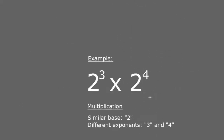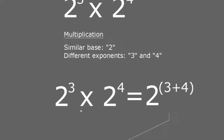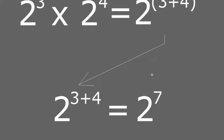In a simple example, if I am multiplying 2 cubed or 2 to the power of 3 by 2 to the power of 4, the same base is the number 2 and the different exponents are 3 and 4. So that simply equals 2 raised to the power of 3 plus 4, which is 2 to the power of 7.